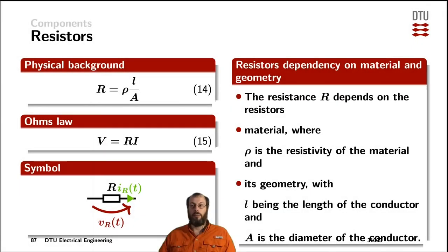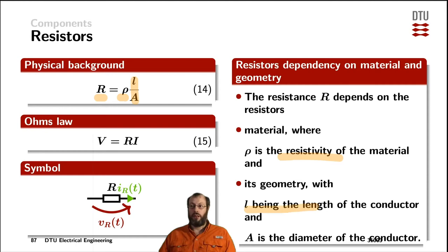The physical background of a resistor is defined by its material and its geometry. The material is the resistivity of the conductor, and the geometry is defined by the length of the conductor and the diameter of the conductor. For DC signals, Ohm's law dictates that the voltage across the resistor is equal to the resistance times the current through the resistor.